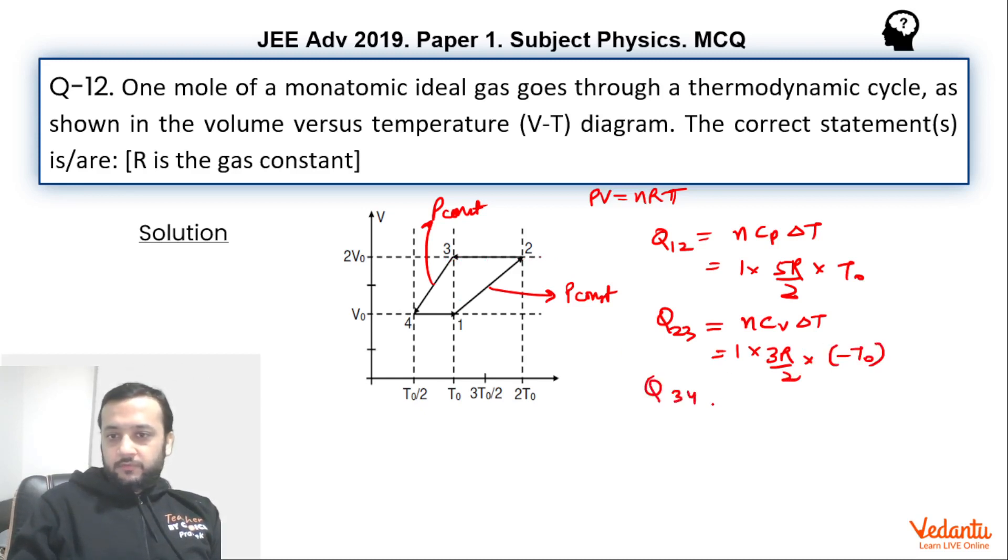Then again Q34, if we talk about, n CP delta T, CP is 5R by 2. Delta T is T0 by 2 from T0, that means minus T0 by 2. And Q41 is isochoric, n CV delta T.